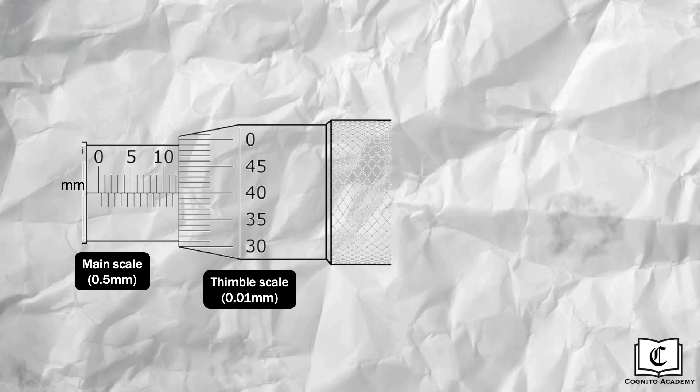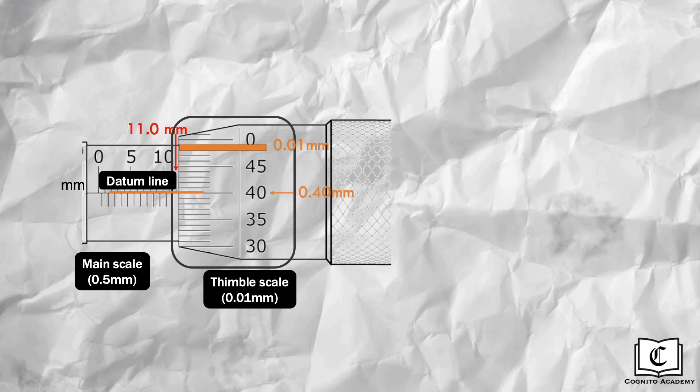First, we read the main scale reading on the immediate left of the timbre, giving us 11.0 mm. Next, we read the timbre scale. Each division of the timbre scale is 0.01 mm. We take the timbre reading that is in line with the orange datum line, giving us 0.40 mm. Adding both readings gives us 11.40 mm.